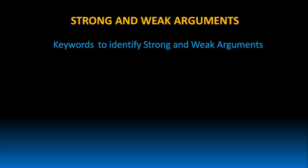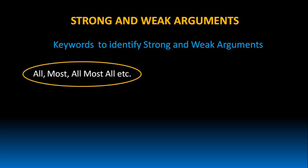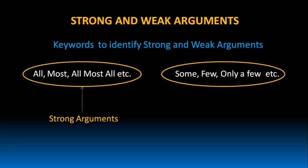Are there any keywords which can help us to identify strong and weak arguments? Yes, there are certain keywords which can help us identify strong and weak arguments. The keywords 'all', 'most', 'almost all' — such keywords represent strong arguments. And the keywords 'some', 'few', 'only few' — they represent weak arguments.